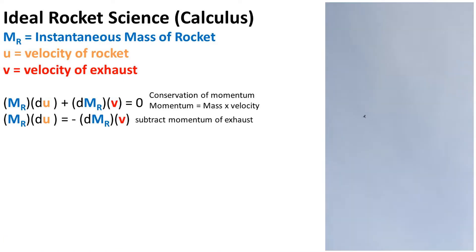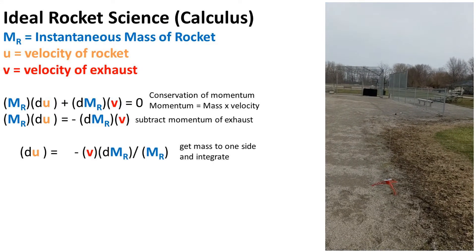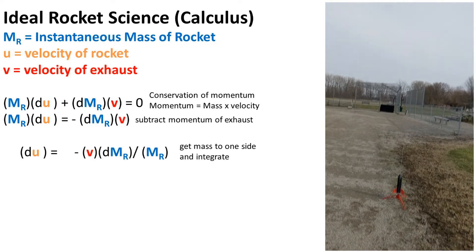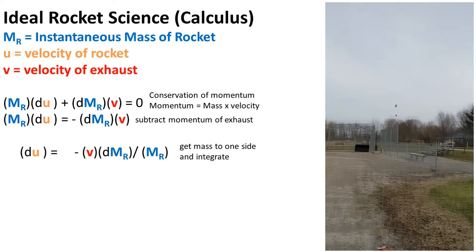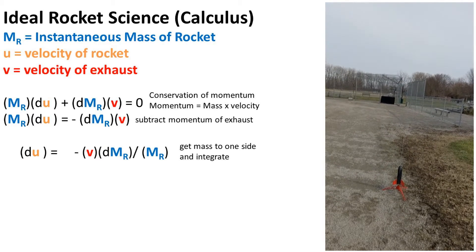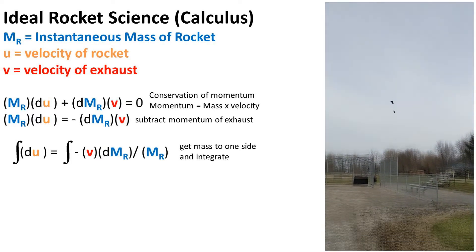Subtracting the momentum of the exhaust from both sides of the equation, we get the displayed equation. Now in order to integrate this equation, we must get our delta of velocity of the rocket to one side and the mass of the rocket to the other side. We do this by using basic algebra. This will allow us to integrate both sides of the equation.